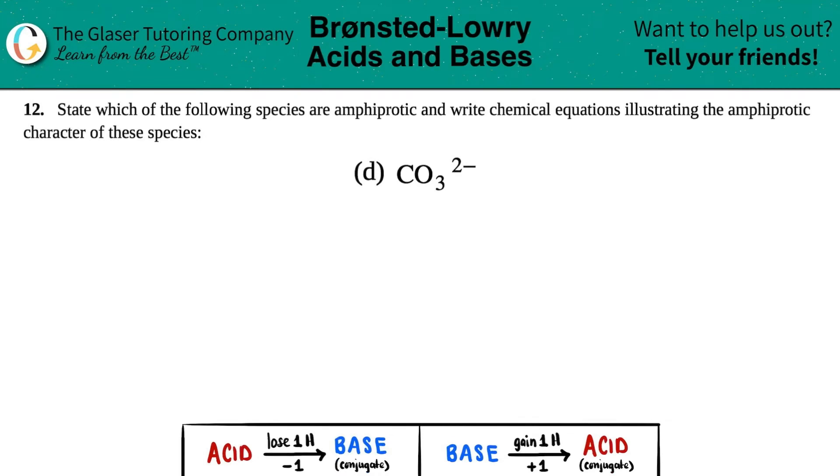Number 12: State which of the following species are amphiprotic and write chemical equations illustrating the amphiprotic character of these species. And then we have letter d. So the question is, is carbonate CO3 2- amphiprotic? Well, some teachers might say amphiprotic, some teachers might say amphoteric, or professors if you're in college, amphoteric.